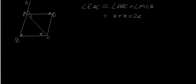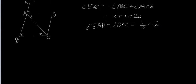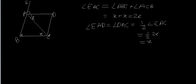Now AD bisects angle EAC, so we can say that angle EAD equals angle DAC. Therefore angle DAC equals half of angle EAC, that is half of 2x, which is x. So we have proved that angle DAC is x. And angle ACB is also x. So we can say that angle BCA and angle DAC are equal. That's one thing we had to prove.